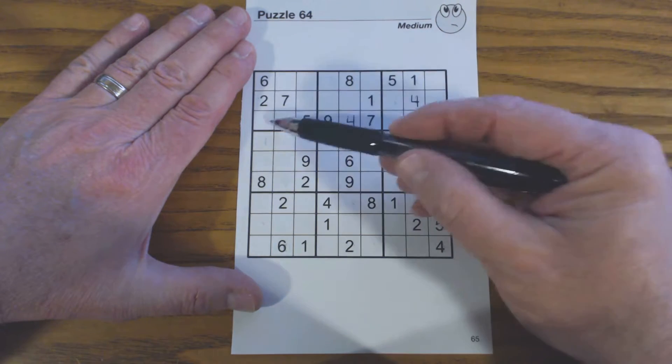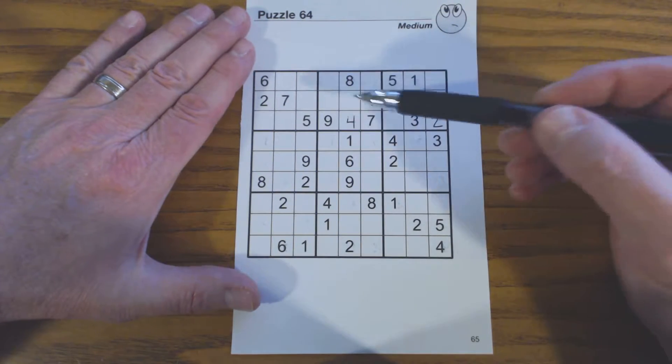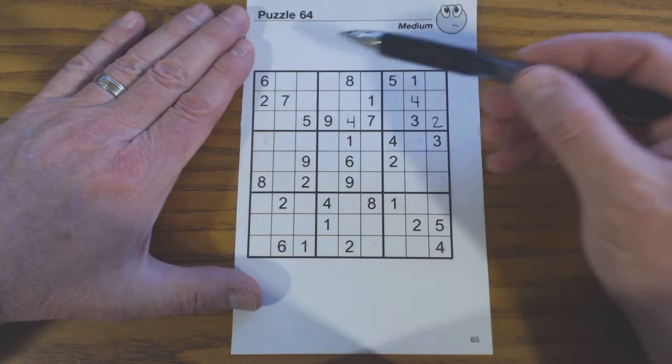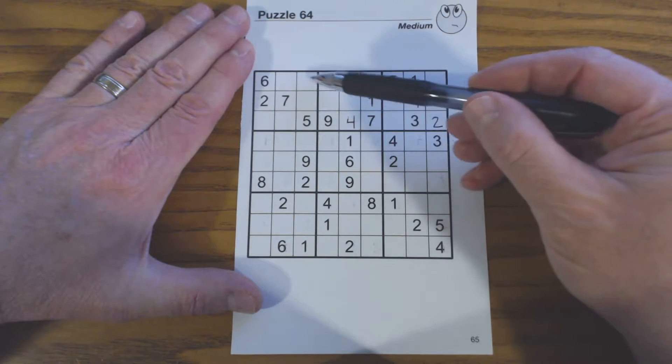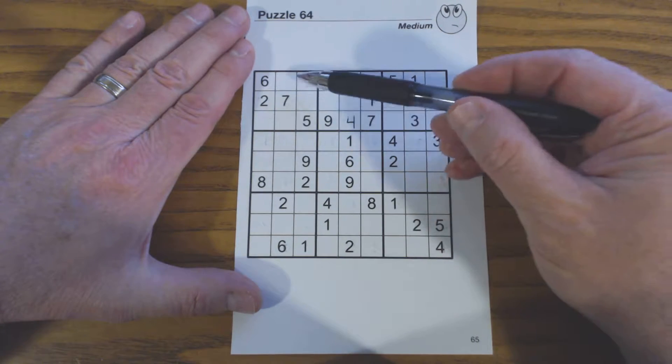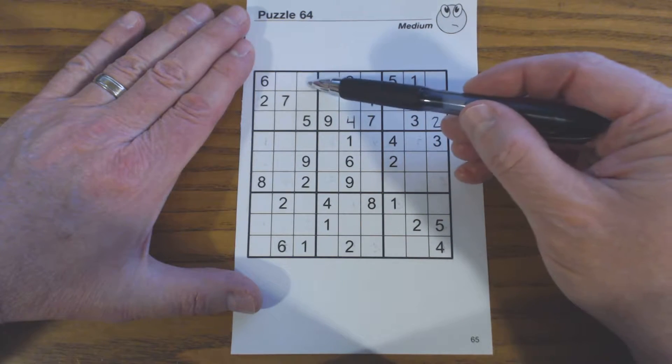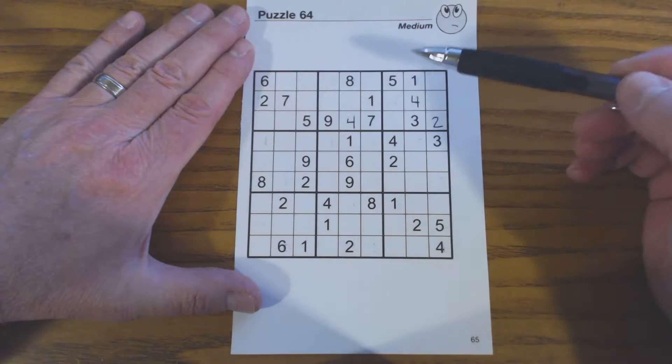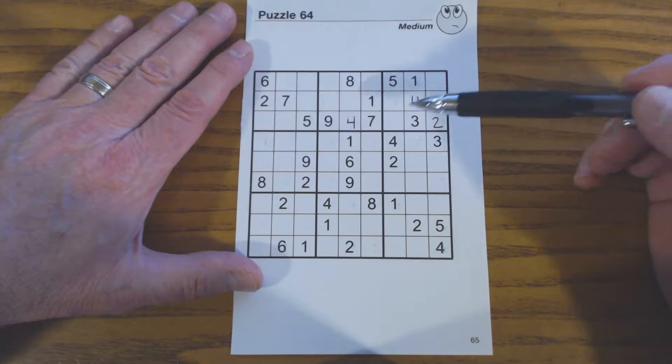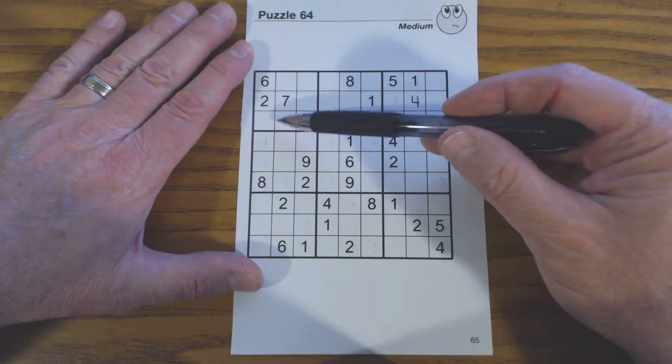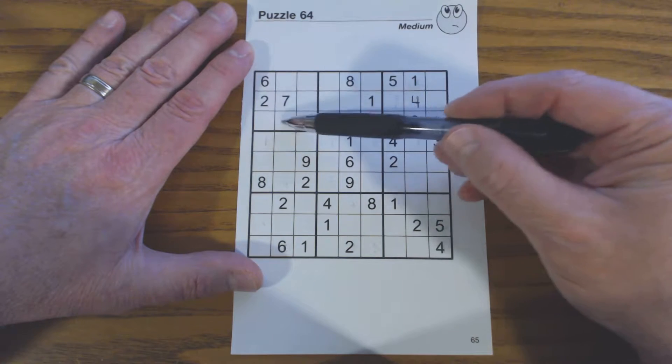We've got a 1, 1, 1 right there. So right now we know that there can only be a 1 in one of these two cells in this square here. There can't be a 1 in any of these three. So if we found another number that had that same characteristic we would find twins.